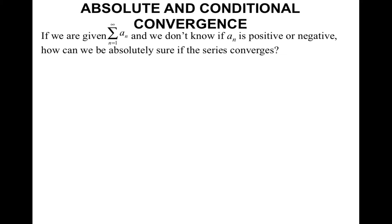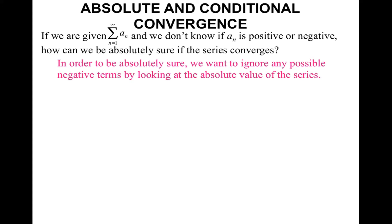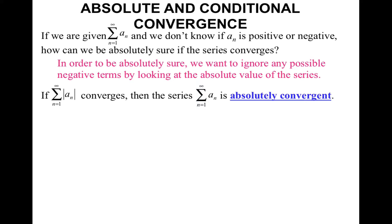So absolute and conditional convergence. If we are given some series and we don't know if a sub n is positive or negative, how can we be absolutely sure if the series converges? In order to be absolutely sure, we want to ignore any possible negative terms by looking at the absolute value of the series. So if the absolute value of the series converges, then the series itself is absolutely convergent.